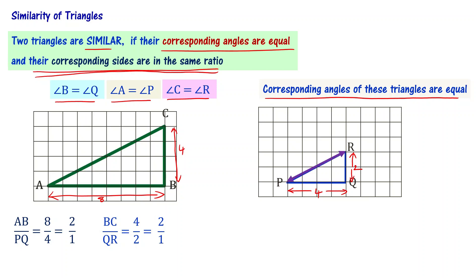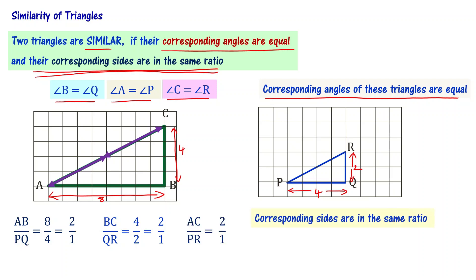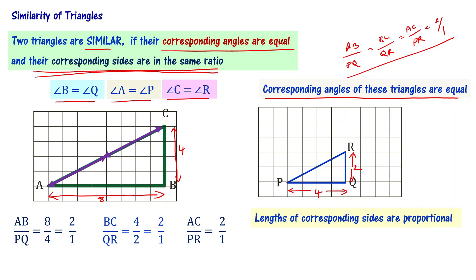Now let's look at the third side. Using a scale to measure PR, its length is 1 unit, and AC is 2 units. So AC by PR equals 2 by 1. You can see that AB by PQ equals BC by QR equals AC by PR, which is equal to 2 by 1. Therefore the corresponding sides are in the same ratio, or in other words, the lengths of corresponding sides are proportional.